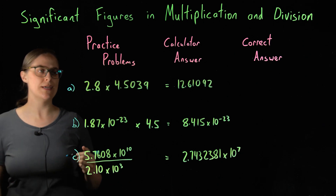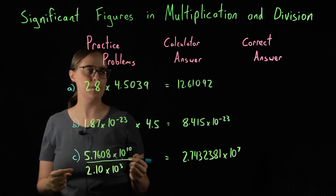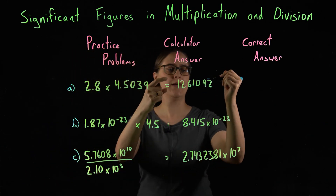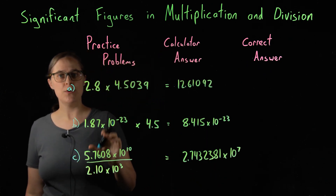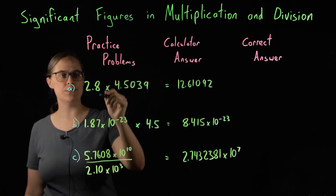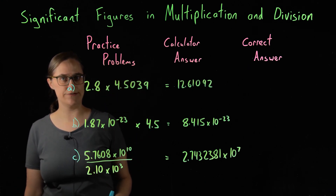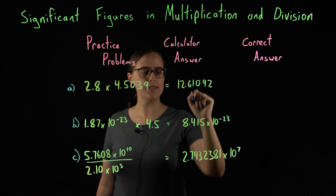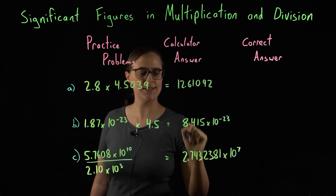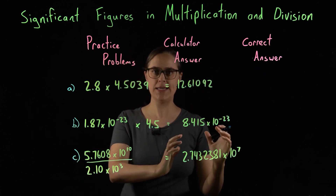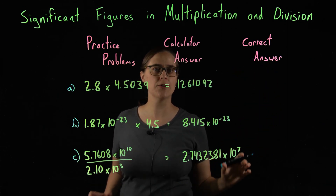Let's do some practice problems. I have three math problems here involving multiplication or division, and in the next column I have the answers that a calculator would give you. Remember, your calculator assumes that these starting numbers have an infinite number of significant figures — they don't, so these answers are wrong. We need to determine how many significant figures should be in each calculated answer and round them properly.